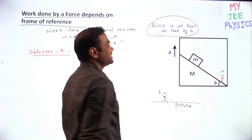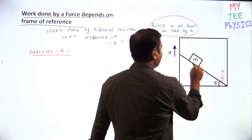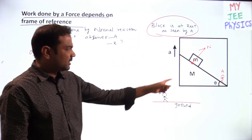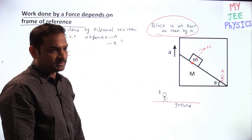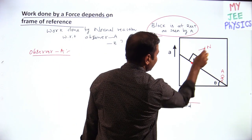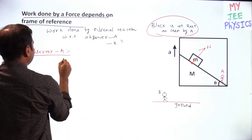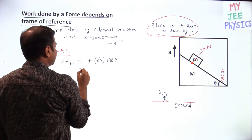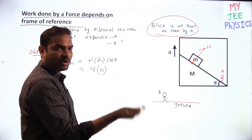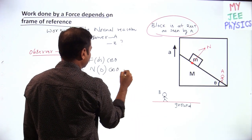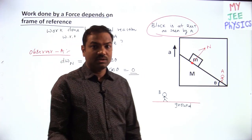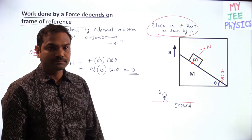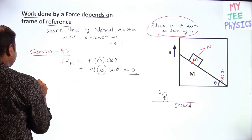The normal reaction acts on the block. Since the block is at rest as seen by A, the displacement of the point of application is zero. Work done = F × ds × cos θ → normal reaction × 0 = zero. So observer A sees that work done by normal reaction on the block is zero. But what about observer B?